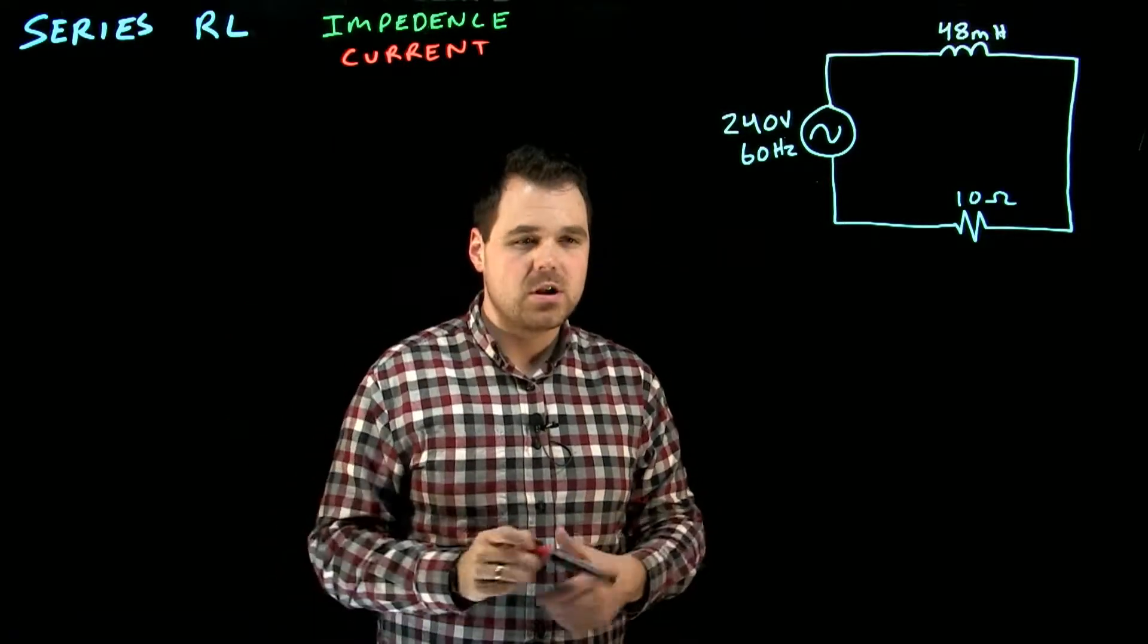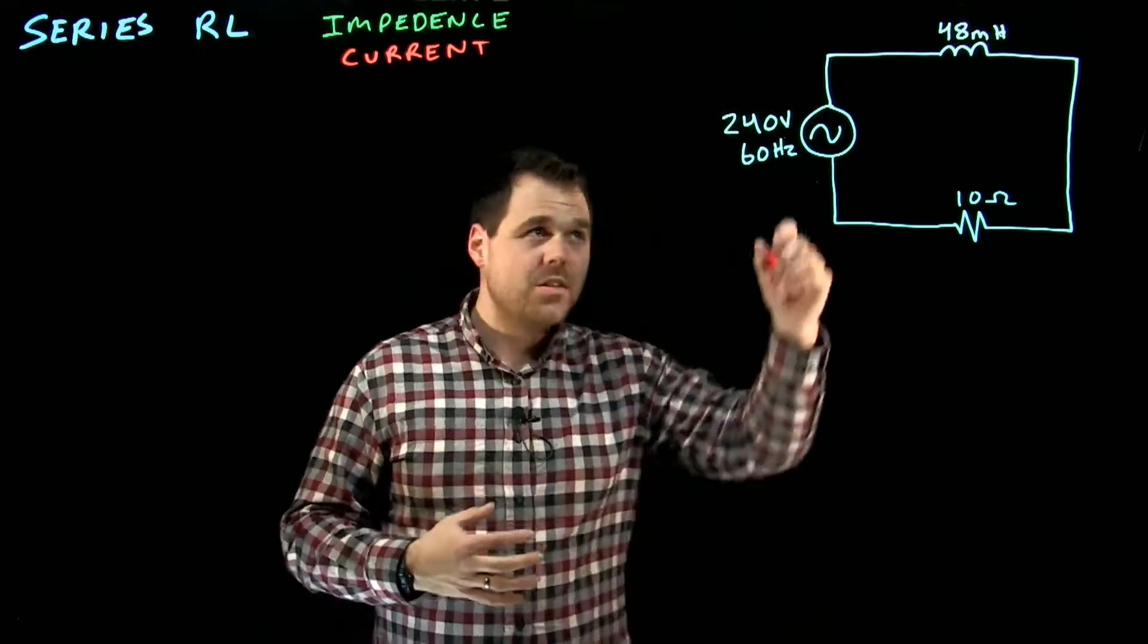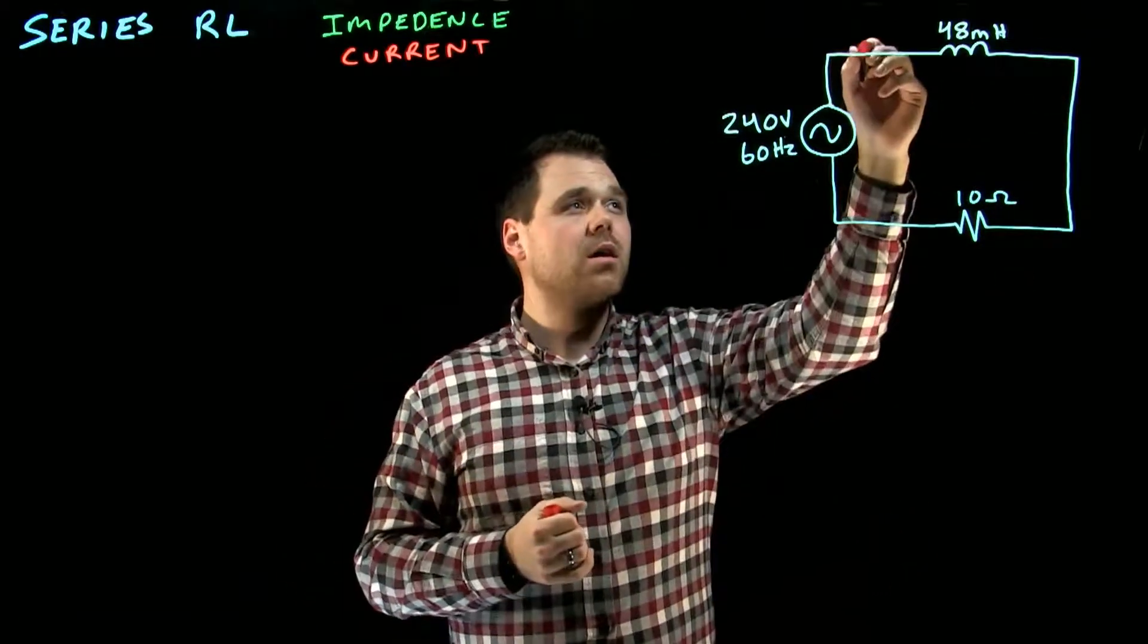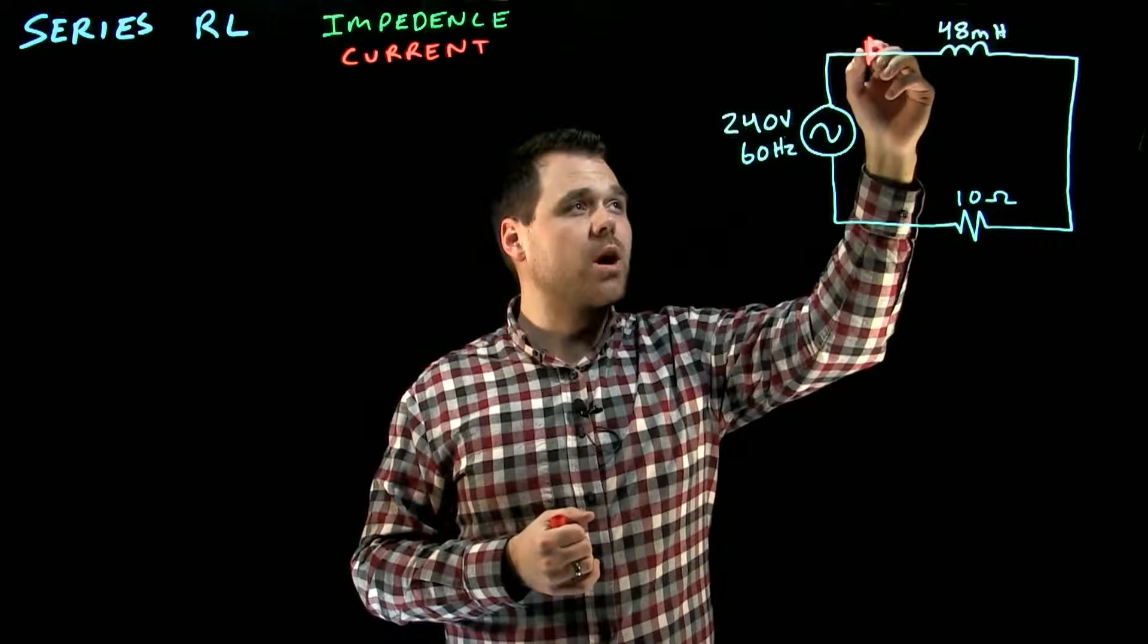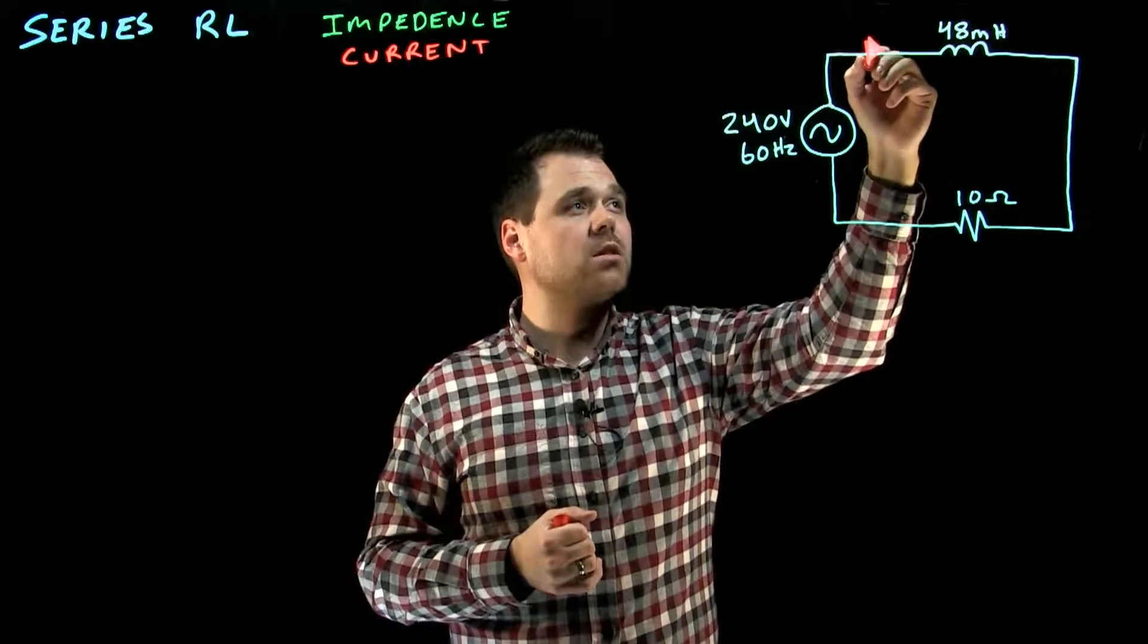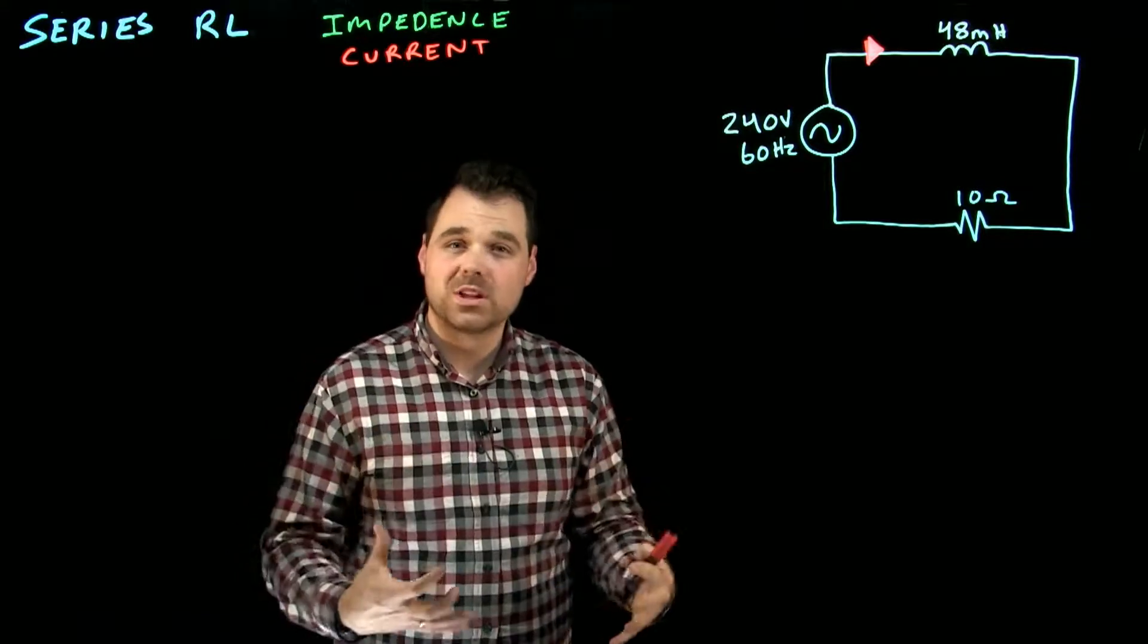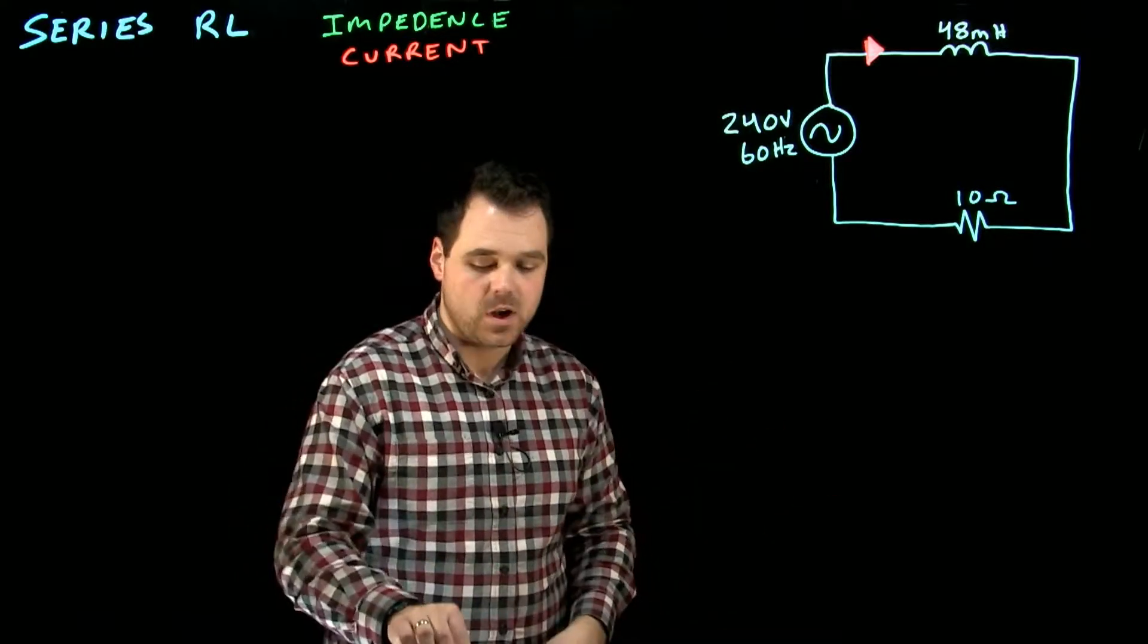Now it's very important to remember when we are doing a series circuit, the current is going to be the same through the entire circuit. That basic rule doesn't change. So what I really want to find out in any time I'm doing a series circuit is I want to know what that current value is. Once I know what current is, everything else becomes very easy to find.